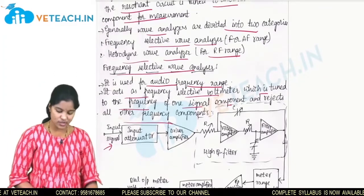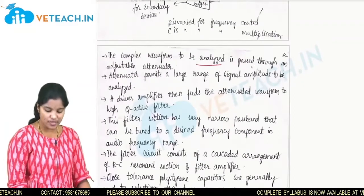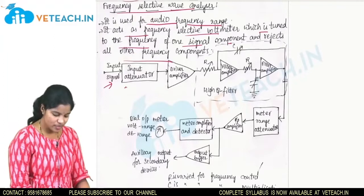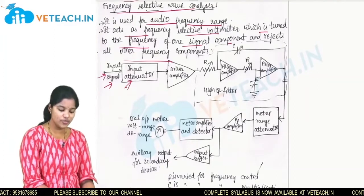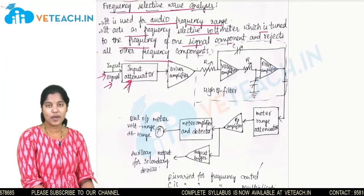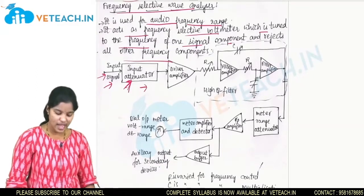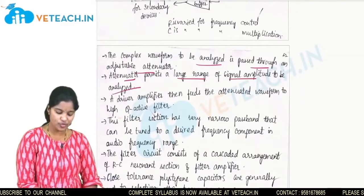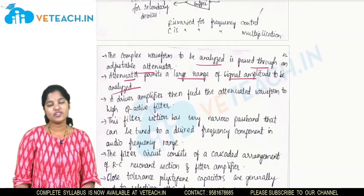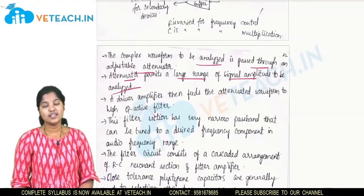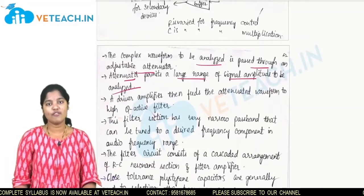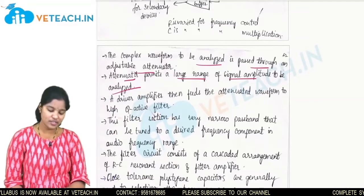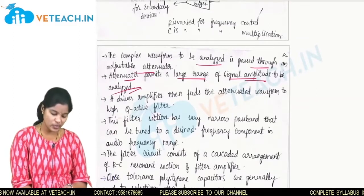The input signal is given here. The complex waveform is analyzed and passed through the adjustable attenuator. The complex waveform is given to the attenuator and then to the driver amplifier. The attenuator permits a large range of signal amplitudes to be analyzed, bringing the desired amplitude value at the output of the attenuator.